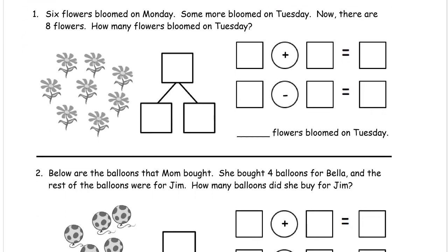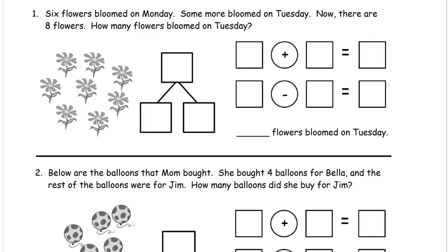Number one. Six flowers bloomed on Monday. Some more bloomed on Tuesday — we don't know how many bloomed on Tuesday. 'Some more' means we don't know how many, but more. Now there are eight flowers. How many flowers bloomed on Tuesday? Here's the picture. We have flowers — one, two, three, four, five, six, seven, eight. So that's all eight flowers that we have at the end.